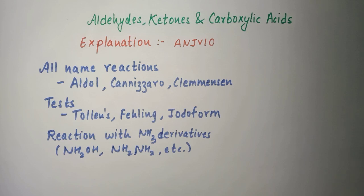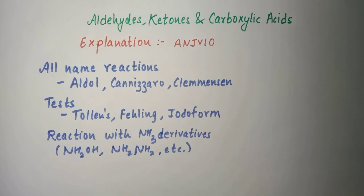Some important topics in this particular chapter — first, we have all the name reactions. Whatever name reactions are there in the chapter, they are important. Most important are: aldol condensation, Cannizzaro reaction, Clemmensen reduction. Other than this, Wolff-Kishner and others are all important.